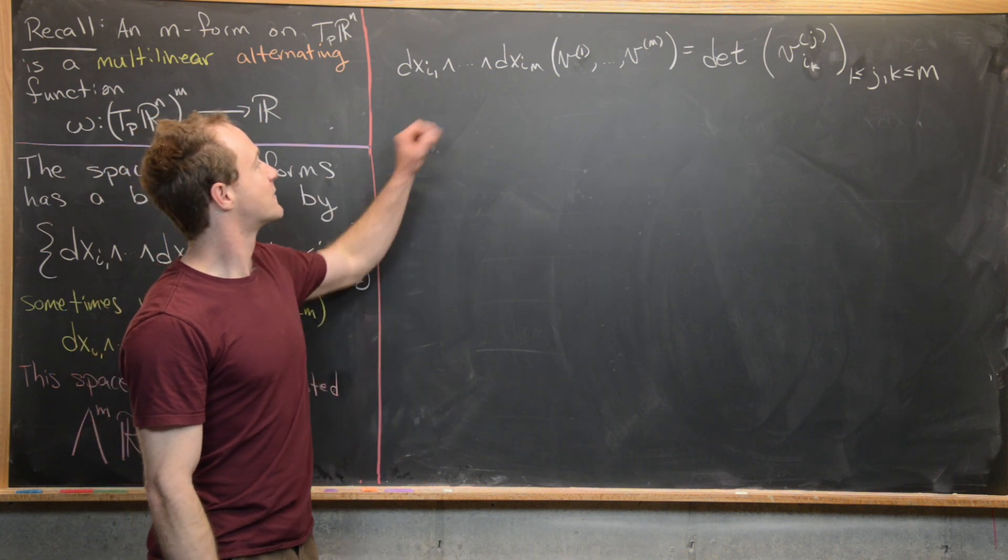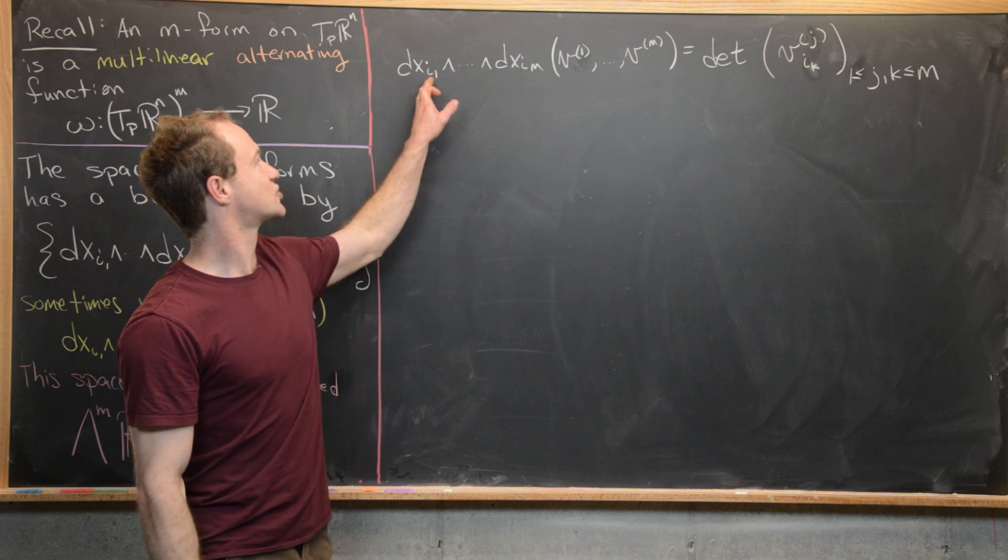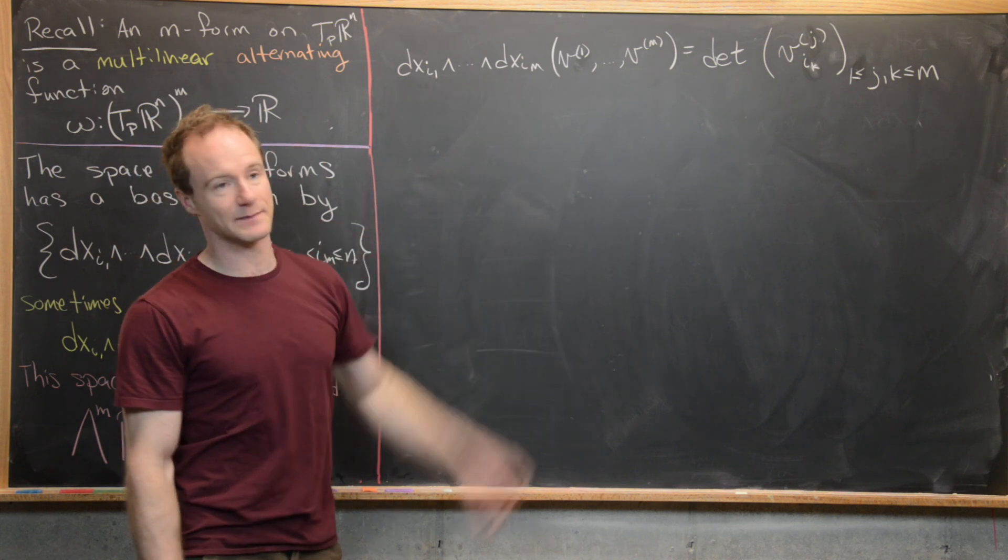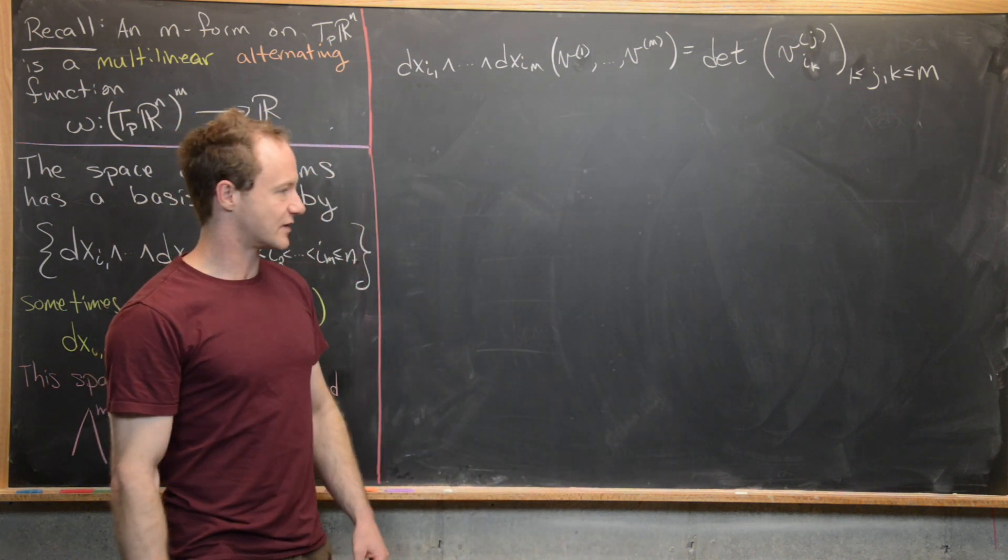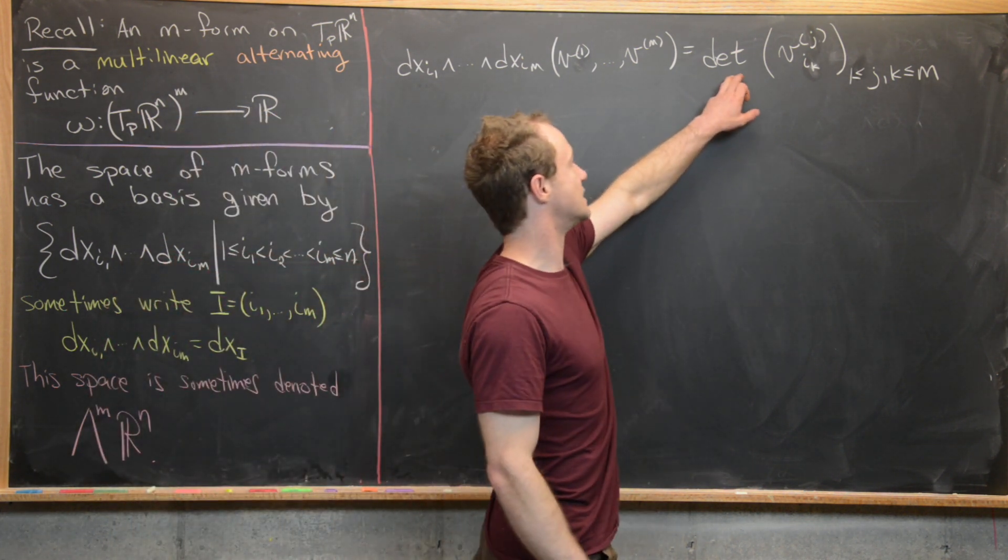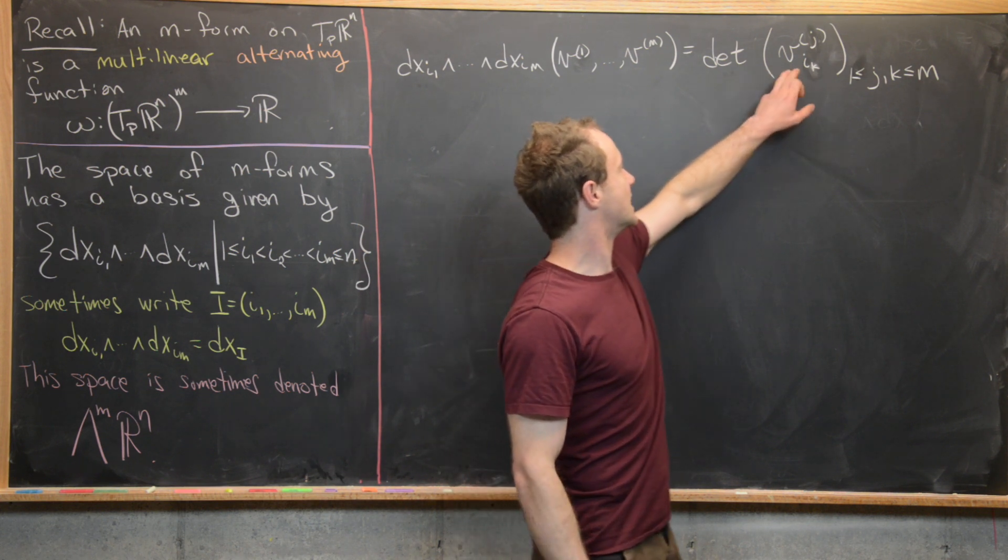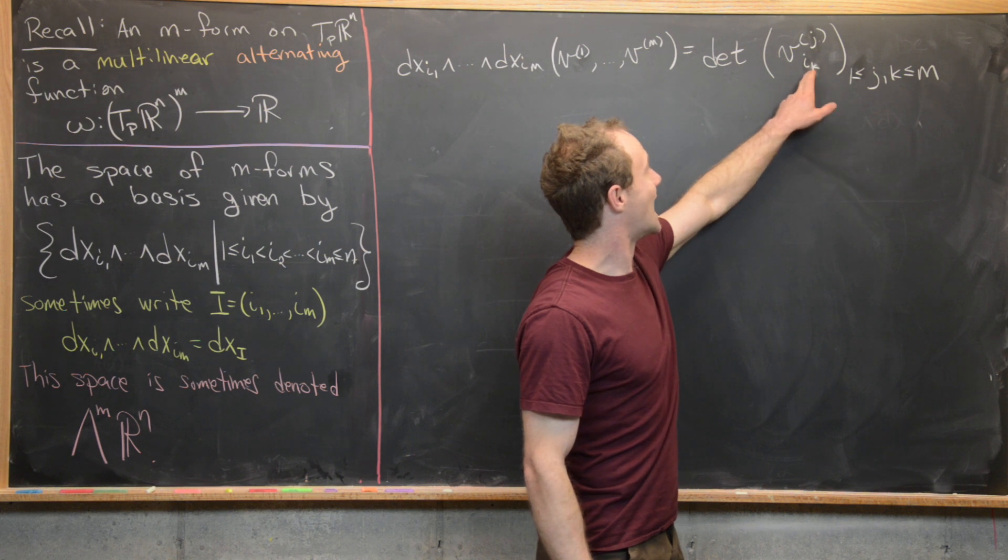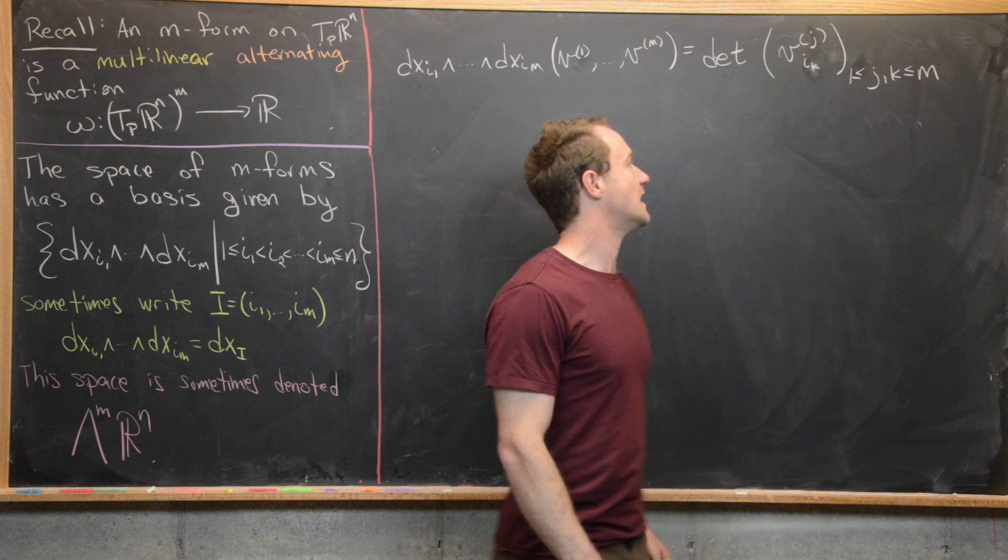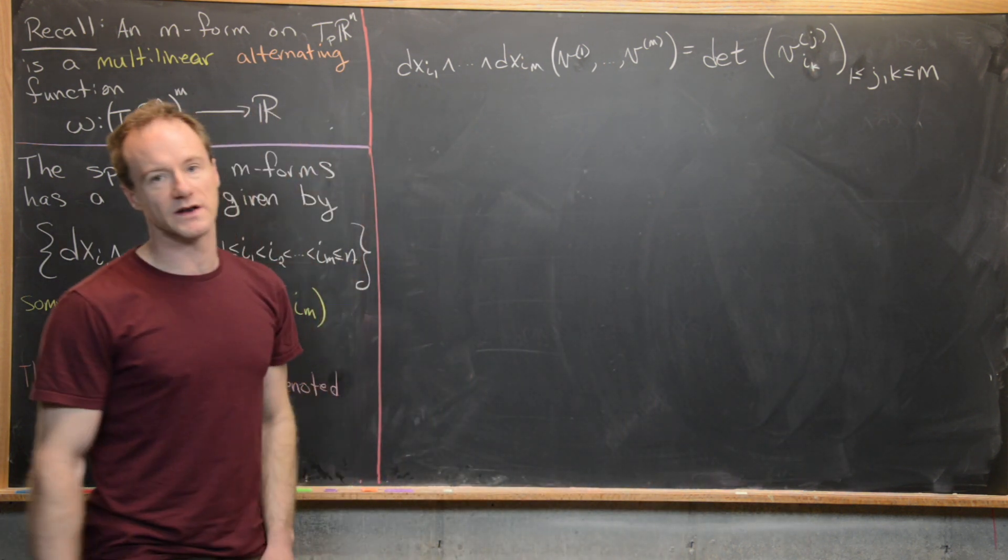And that M by M matrix you get from taking these entries, the I1 entry all the way up to the IM entry, from these vectors, and then putting all that together into an M by M matrix. So we have the determinant of the Jth vector, and then the IKth entry, and then J and K run from 1 to M.